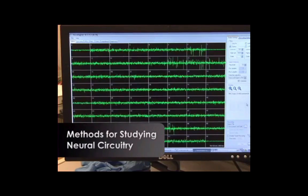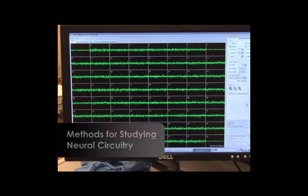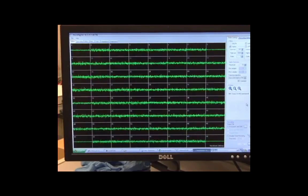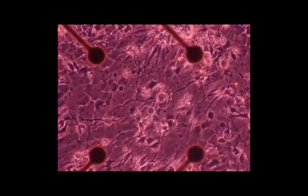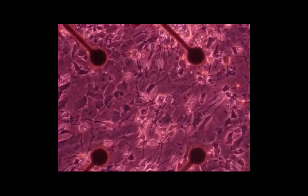Techniques used to study neural circuits need to be able to monitor many neurons at once. The use of multi-electrode arrays with many contacts is one method used to record from multiple neurons simultaneously.